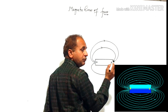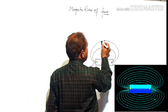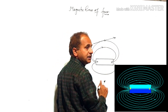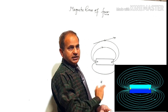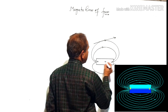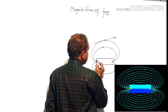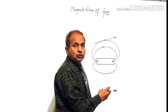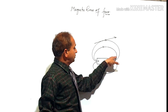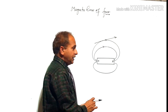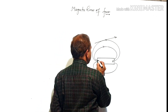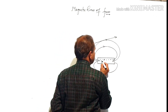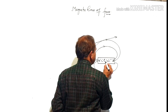A tangent drawn at any point on the magnetic line of force gives the direction of magnetic field intensity at that particular point. The direction of magnetic lines of force is taken from North to South outside the magnet, and inside the magnet the direction is taken from South to North.